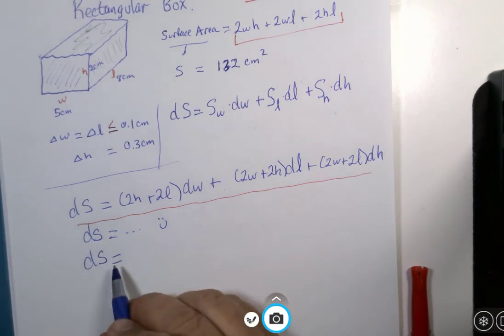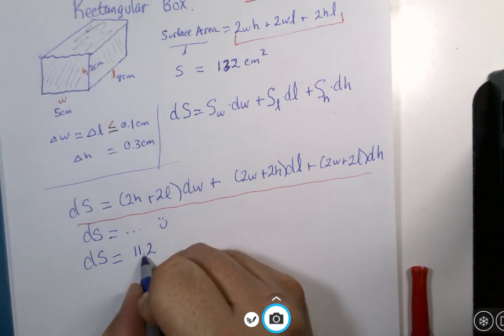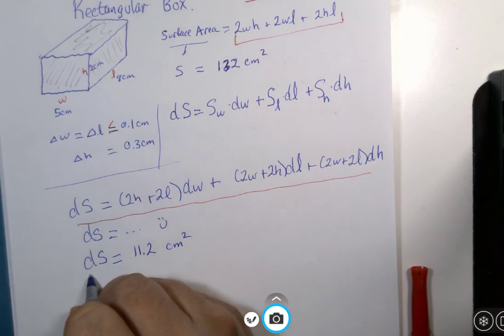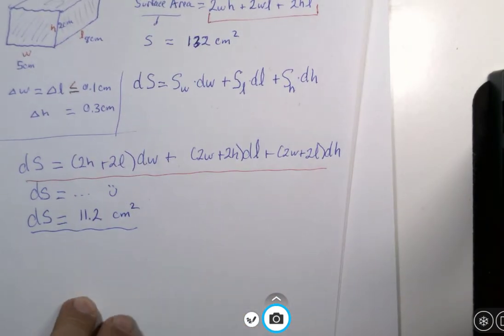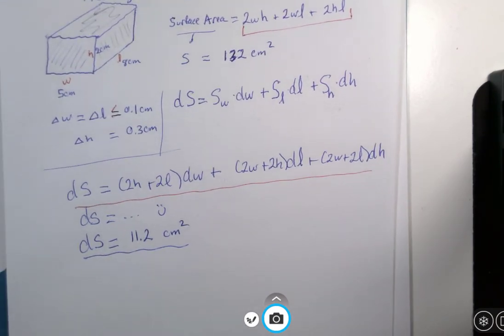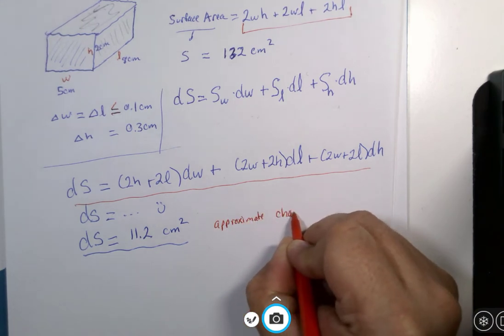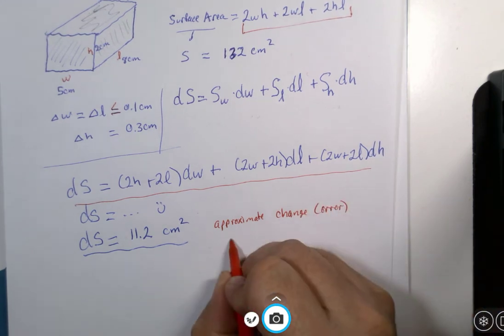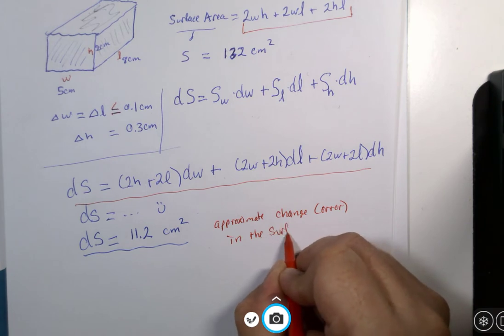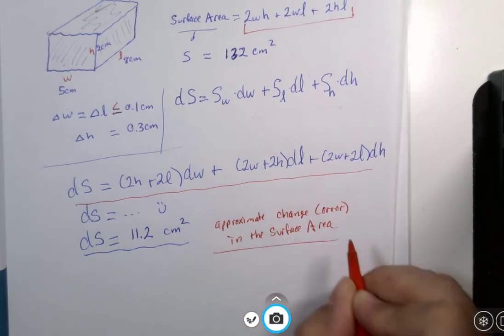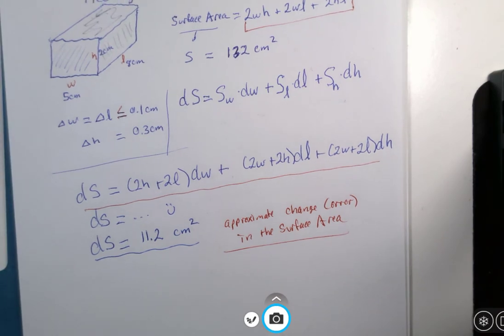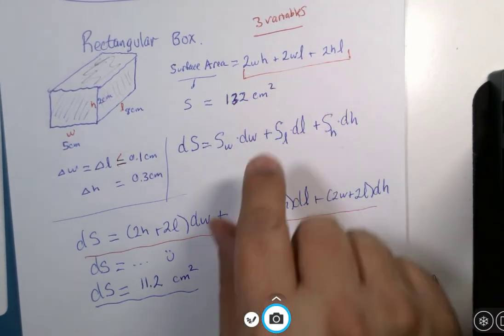Okay. I'm back. I got 11.2 and the units would be square centimeters since we are finding an approximate change or error in the surface area. If the arithmetic is simple enough, I don't let students use a calculator on the exam in my room. And if I do let them use a calculator, then the arithmetic is going to be messier than this. That's not too difficult of a function to work with.